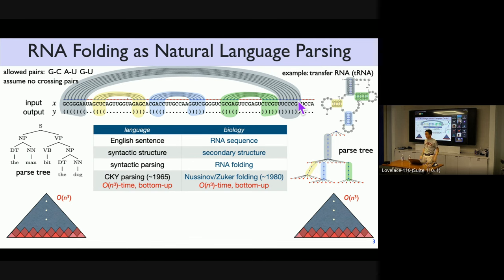People actually have tree banks. You have tree banks for English, for Chinese. You have tree banks, or we call it structure databases, for proteins and RNAs. AlphaFold is trained on these protein tree banks. You can imagine that way.